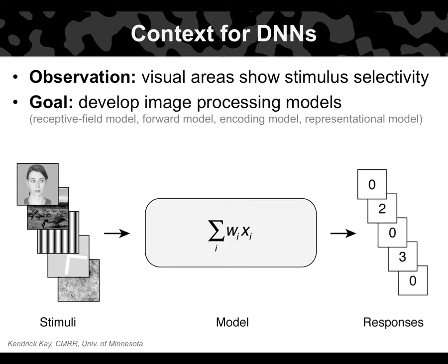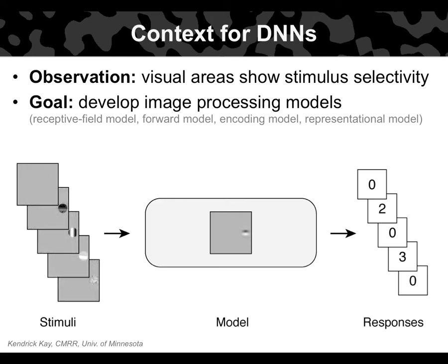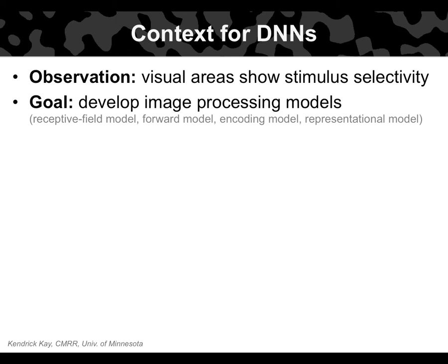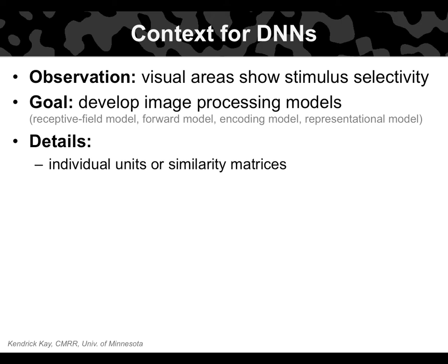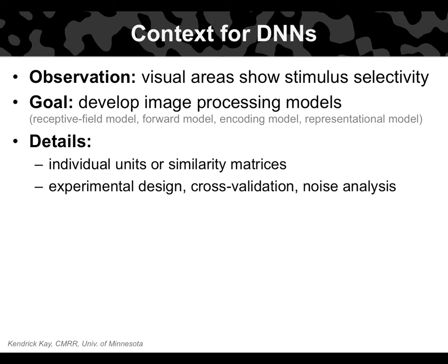Suppose the specific weights in this model are given here: most weights are zero, indicated by gray; some weights are negative, indicated by black; some weights are positive, indicated by white. This is a horizontal linear filter, and it's this model that gave rise to the responses you see here. This model gives us insight into what this unit is computing. There are of course details such as whether to model individual units or similarity matrices, what type of stimuli to use, and how to do cross-validation to ensure we're not overfitting.